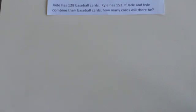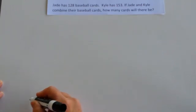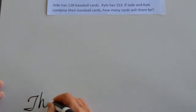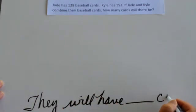The first step in model drawing is to read the entire problem. This problem says Jade has 128 baseball cards, Kyle has 153. If Jade and Kyle combine their baseball cards, how many cards will there be? The second step in model drawing is to write a sentence that will help you answer this question. We're not looking for the answer — we're looking for a sentence that will help us determine what the answer would look like. So if the question is how many cards will there be, our sentence might be: they will have blank cards.